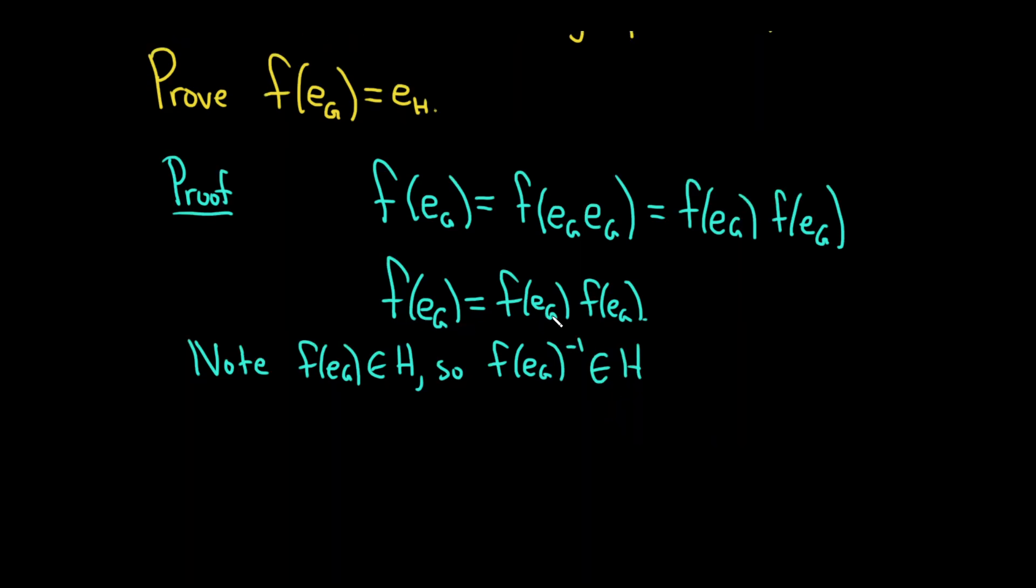We can multiply both sides of this equation on the left by this element. So f of e sub G inverse times f of e sub G is equal to f of e sub G inverse times f of e sub G times f of e sub G.